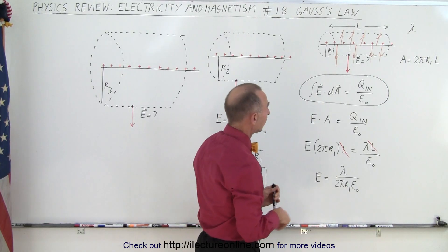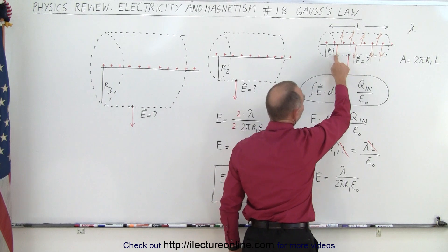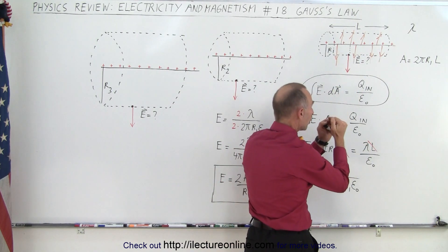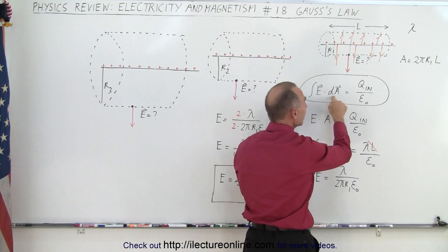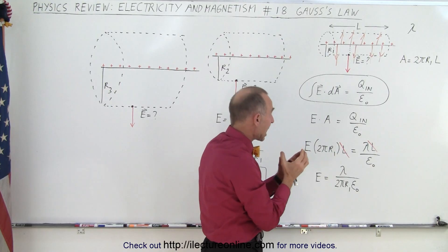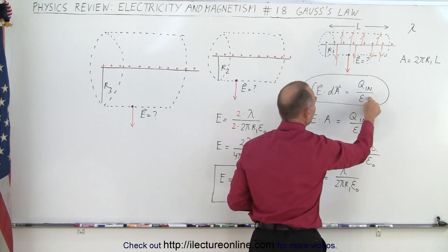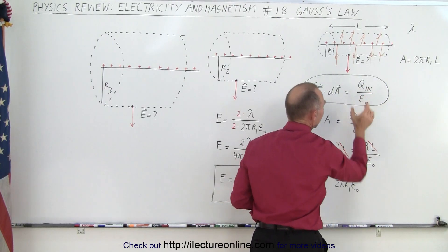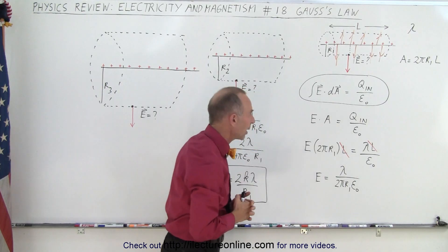It states that the integral of the electric field going through the surface multiplied by the surface element dA equals q inside divided by epsilon sub naught — the charge inside divided by the permittivity of free space.